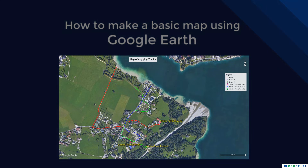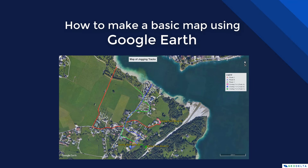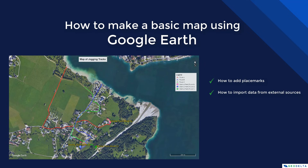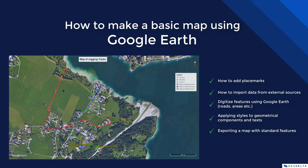What you're seeing here is a simple representation of three jogging tracks, which you can see from these three lines. You can also see the locations of the meeting points. Some key things I'll cover: how to add place marks to indicate locations as points on your map, how to import data from external sources like a shapefile, how to digitize things in the map itself, and how to do basic styling of icons and text before publishing the map.